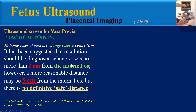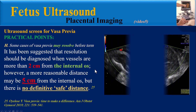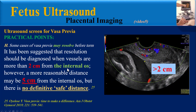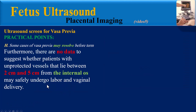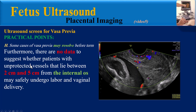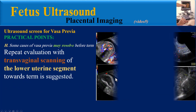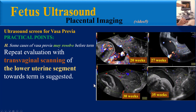An image at 35 weeks gestation shows complete resolution of Vasa Previa from the lower uterine segment. It has been suggested that resolution should be diagnosed when vessels are more than 2 cm from the internal os; however, a more reasonable distance may be 5 cm, though there is no definitive safe distance. There are no data to support whether patients with vessels between 2 and 5 cm from the internal os may safely undergo labor and vaginal delivery. Repeat evaluation with transvaginal scanning towards term is the best recommendation.